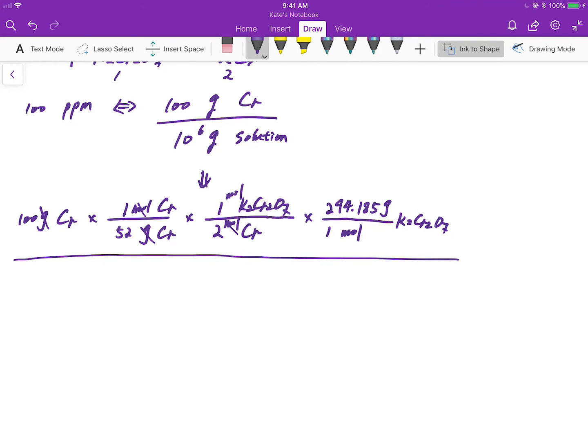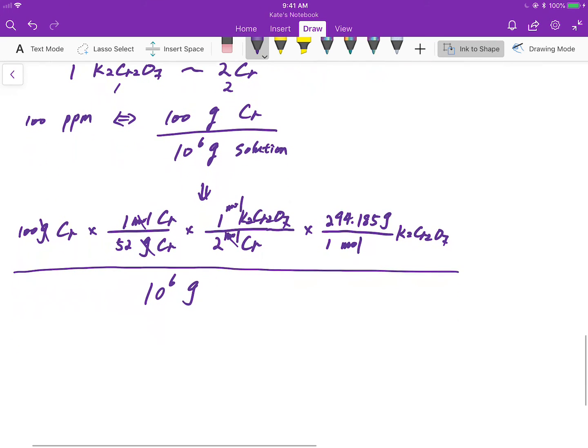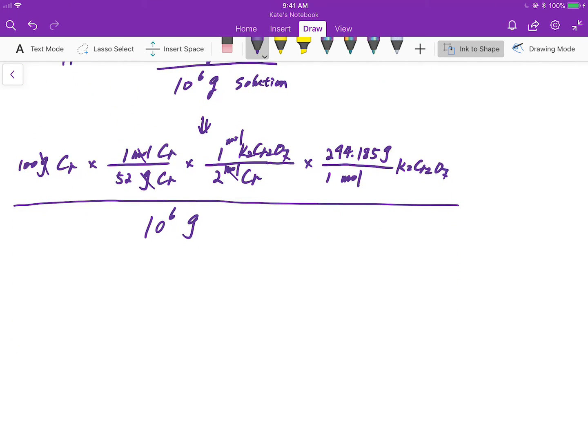In the denominator, we have a million grams of solution. Let's assume this solution is a water solution. Most solutions are prepared from water. And we know that for water, density is one gram per milliliter, and convert milliliters to liters.